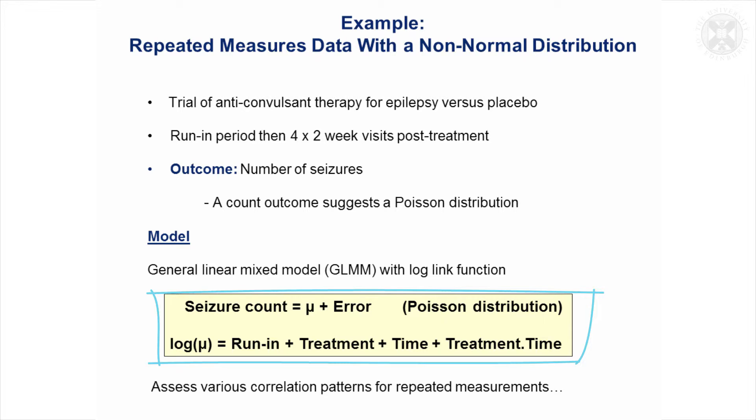The fixed effects in the model that we'll consider are going to be the number of seizures in the run-in period. We'll fit treatment, time, and the treatment by time interaction. And just as with that first clinical trial, it's probably worth looking at different possible covariance structures.